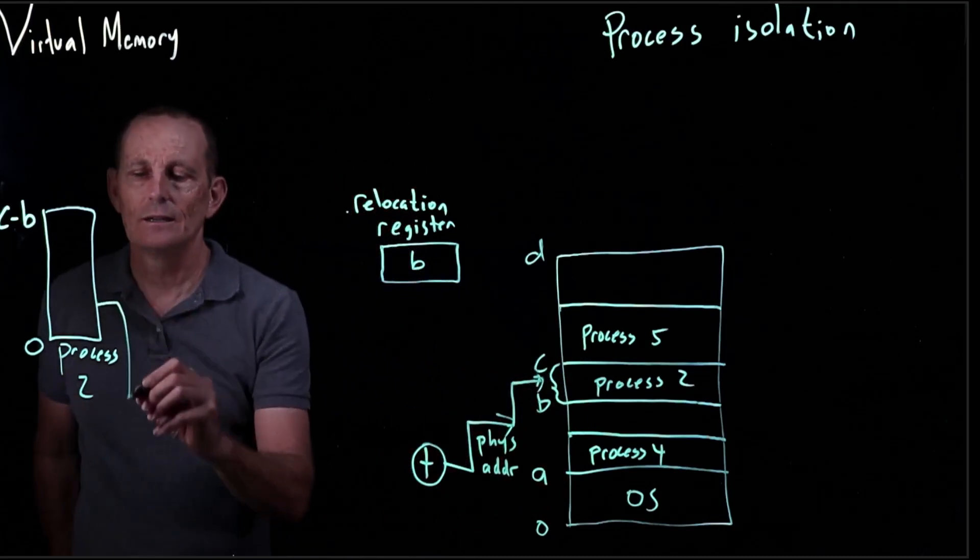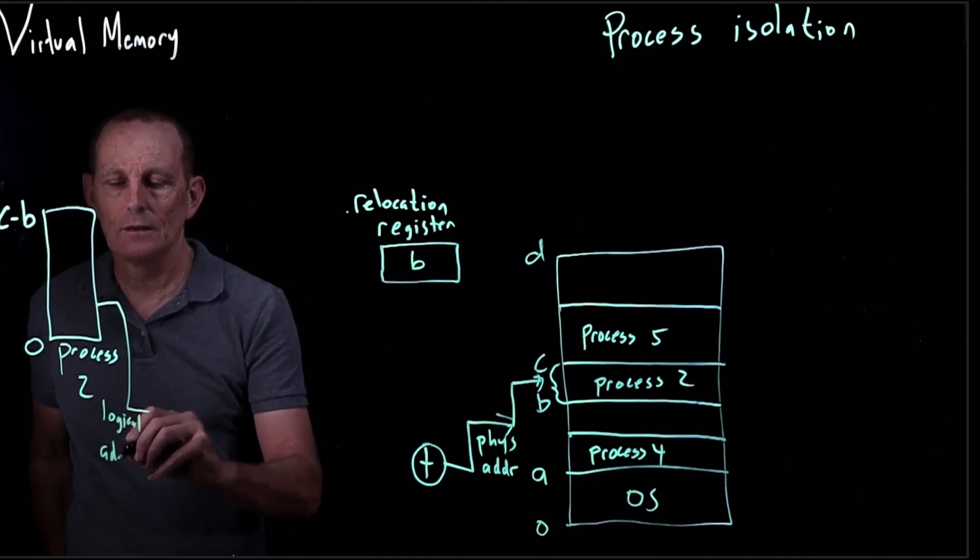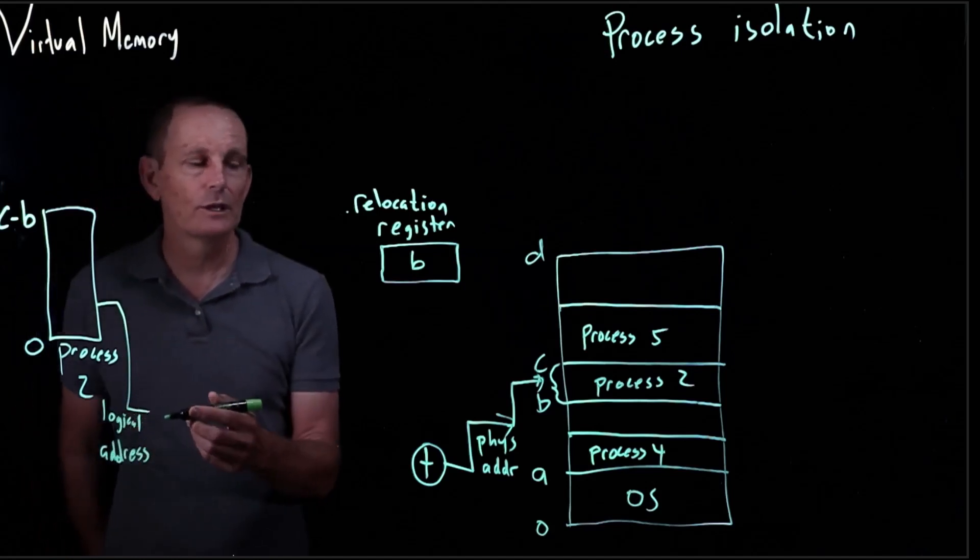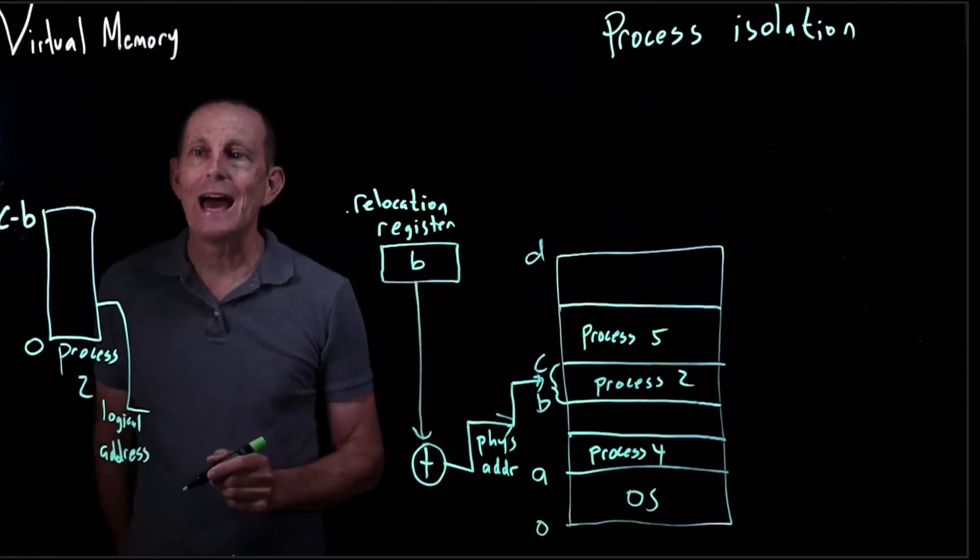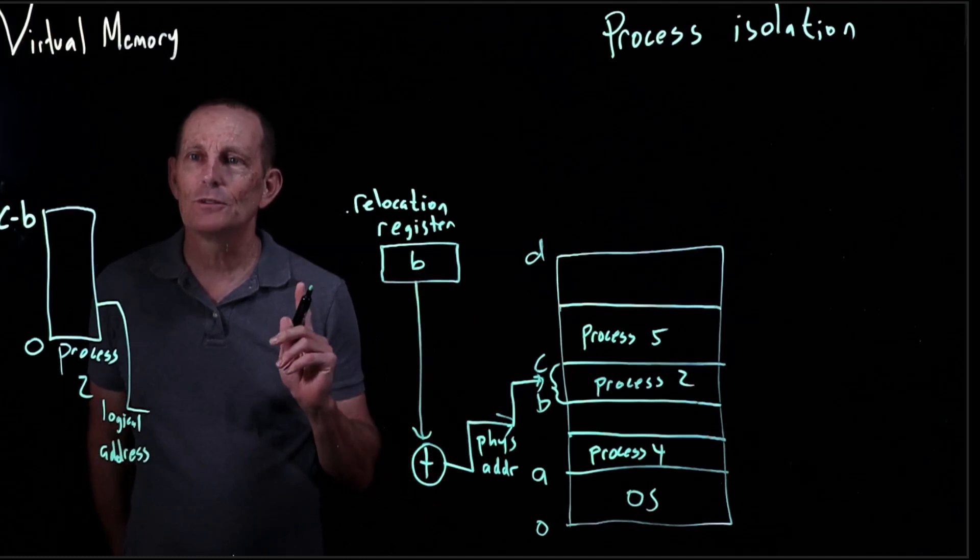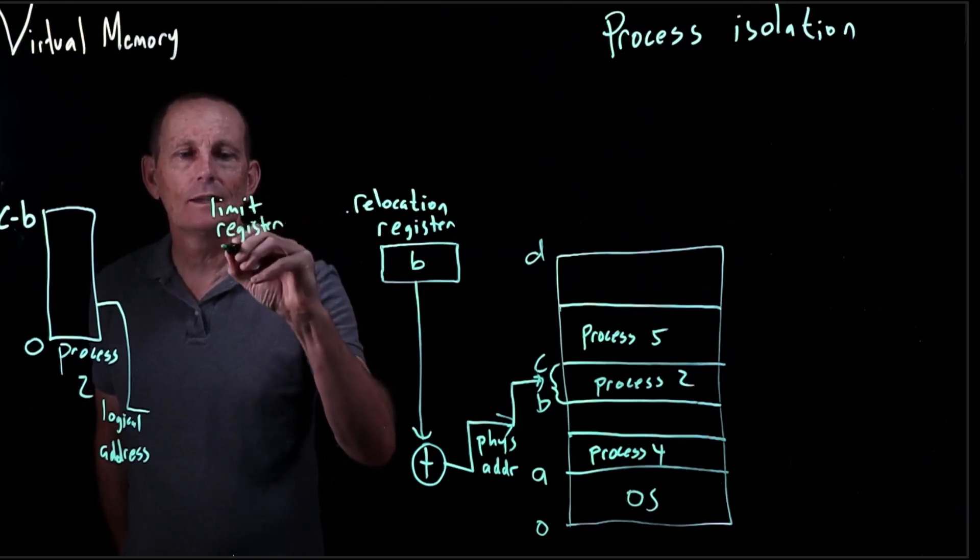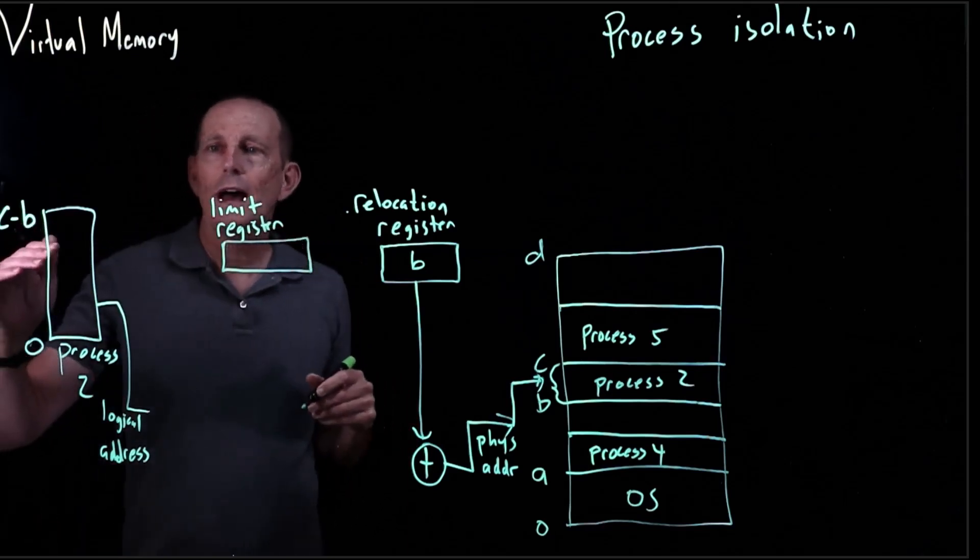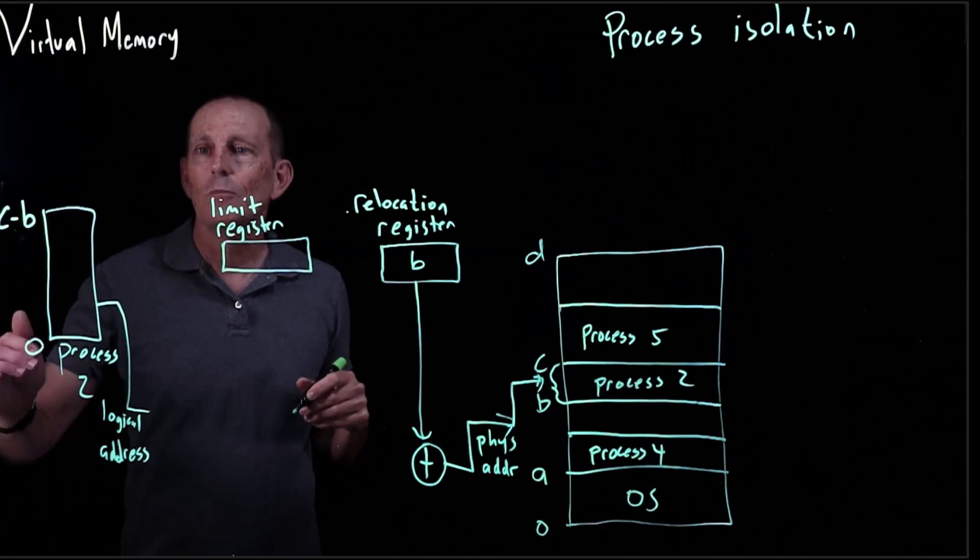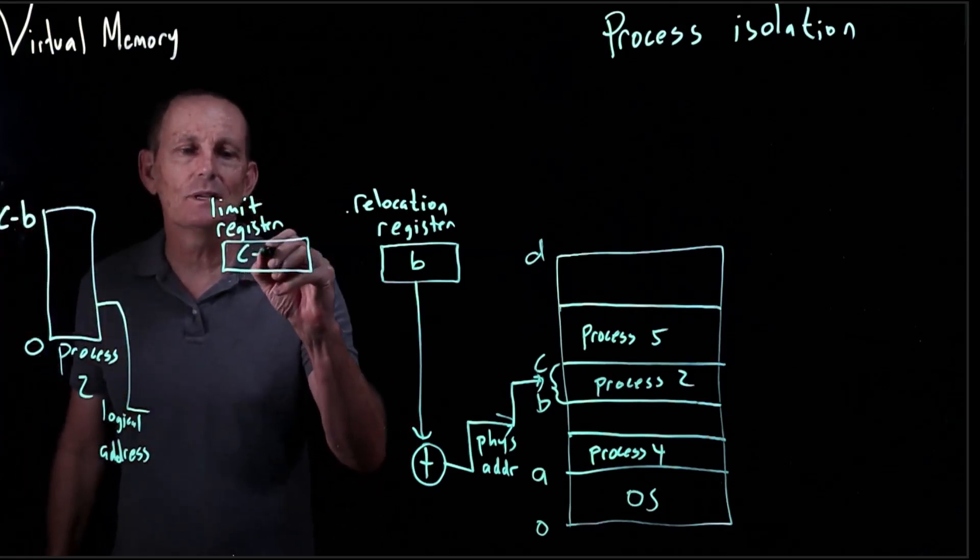So we're going to take a logical address and add it to the relocation register. But first, what we're going to do is look at the limit register. The limit register basically says we know it can't be below zero, but we also impose an upper bound. The lower bound is zero, the upper bound should be C minus B.